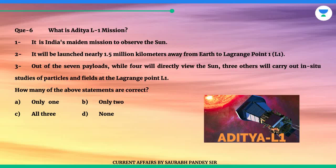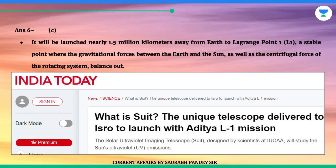How many of the above statements are correct? A: Only one. B: Only two. C: All three. D: None. The answer is C. It will be launched nearly 1.5 million kilometers away from Earth to Lagrange point 1, L1, a stable point where the gravitational forces between the Earth and the sun, as well as the centrifugal force of the rotating system, balance out.